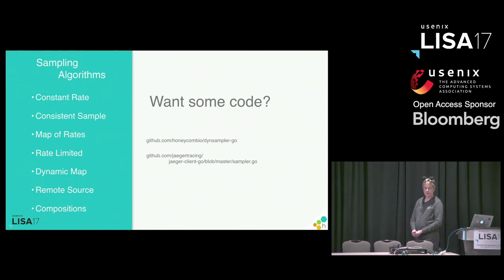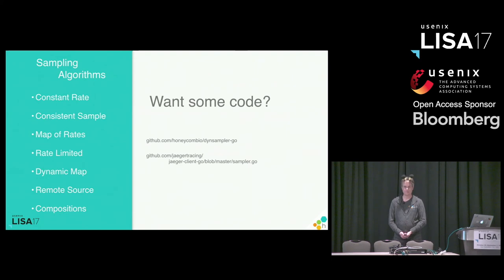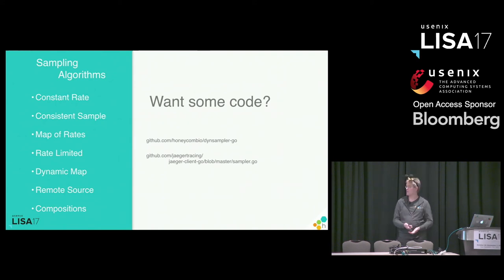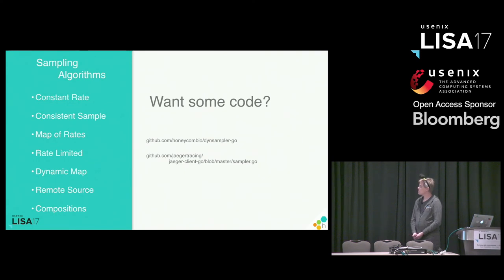There are many ways to choose what you should sample. I've collected a few out of two different sampling libraries — one that we wrote at Honeycomb, another is the Jaeger open tracing implementation out of Uber. They have slightly different constraints, but many of the algorithms are in fact the same between the two libraries despite being created with slightly different goals. The code for all of these is available on GitHub. The slides are up and will be after this talk, so all of these URLs will be available there.